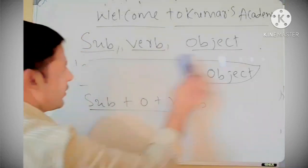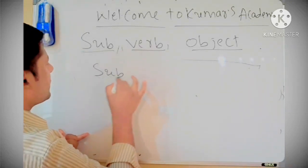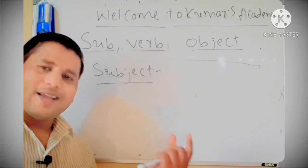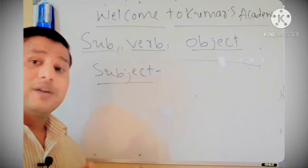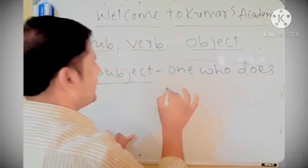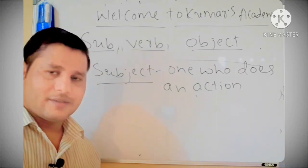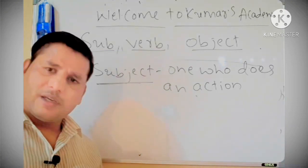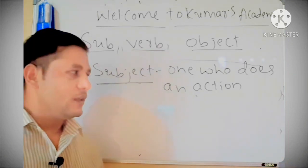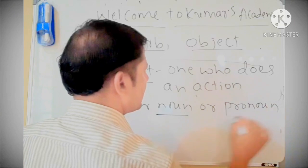Now I will explain what is subject, what is verb, and what is object. What is subject? Subject means the person or an action which is done. One who does an action is called subject. If something has happened, if the action is done, definitely behind there is a subject. The subject may be a person, and there is either a noun or a pronoun. That is called subject.